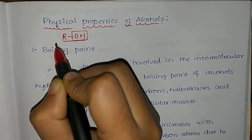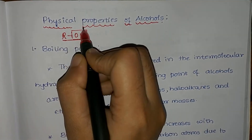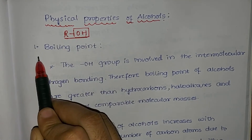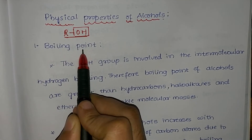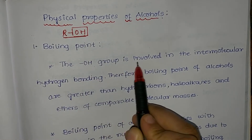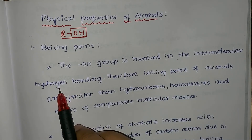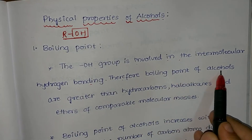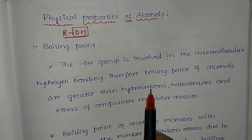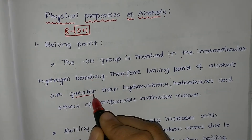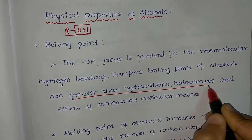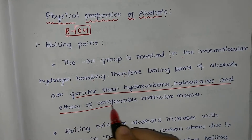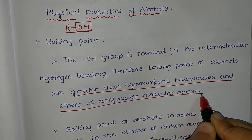The physical properties of alcohols mainly depend upon the OH group attached to an alkyl group. Let us consider the first property: boiling point. The OH group is involved in intermolecular hydrogen bonding. Therefore, the boiling point of alcohols is greater than that of hydrocarbons, haloalkanes, and ethers of comparable molecular masses.